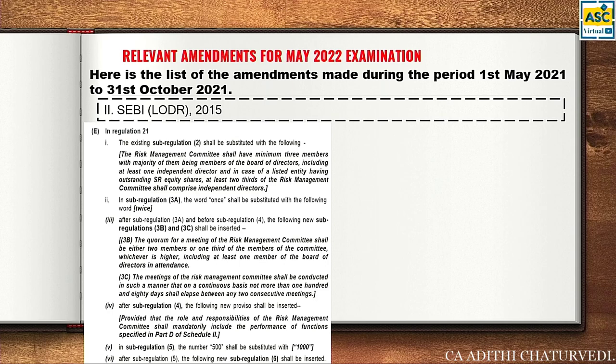After Sub-regulation 3A, new Sub-regulations 3B and 3C are inserted. Sub-regulation 3B: quorum for a meeting of the Risk Management Committee shall be either two members or one-third of the members of the committee, whichever is higher, including at least one member of the board of directors in attendance. Sub-regulation 3C: meetings of the Risk Management Committee shall be conducted such that on a continuous basis, not more than 180 days shall elapse between any two meetings — this defines the frequency of their meetings.